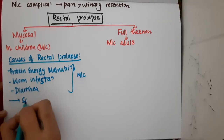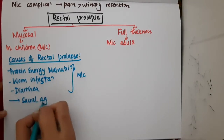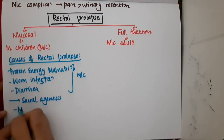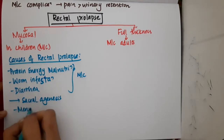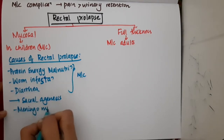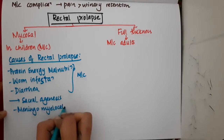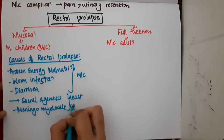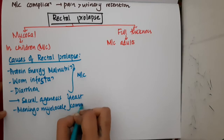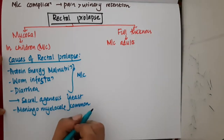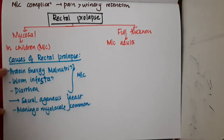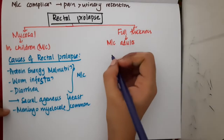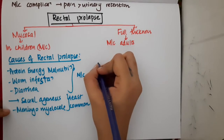We also have sacral agenesis and meningomyelocele, which are the least common causes. So to summarize: protein-energy malnutrition, worm infestation, and diarrhea are the most common causes, whereas sacral agenesis and meningomyelocele are the least common causes.